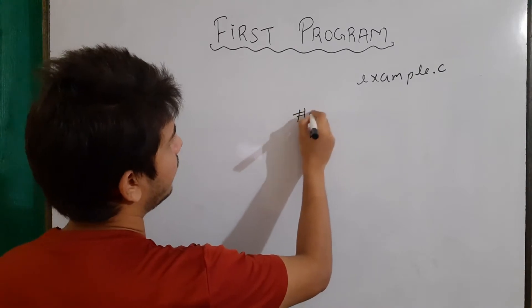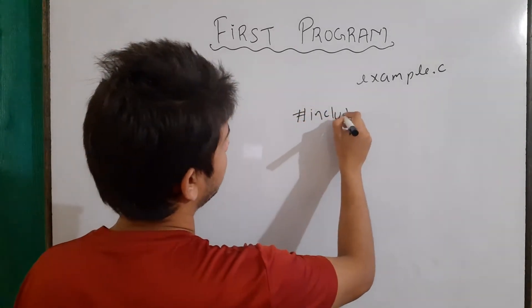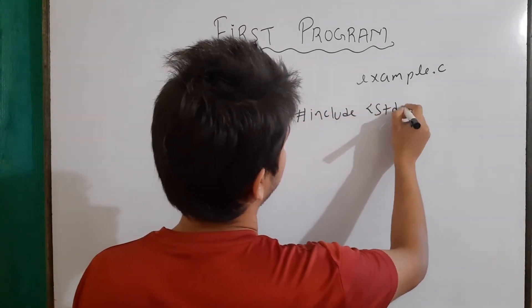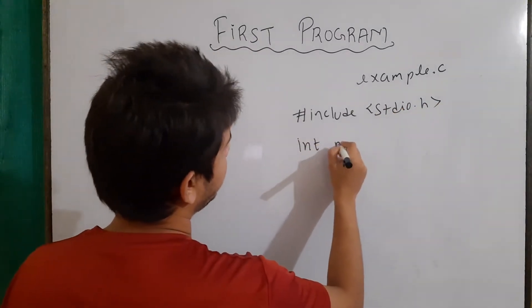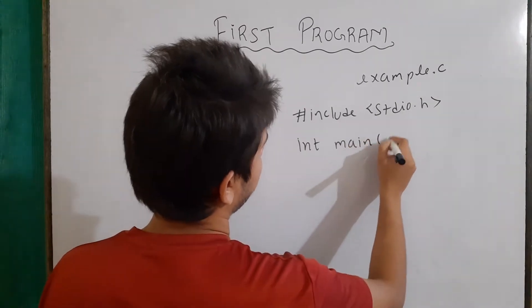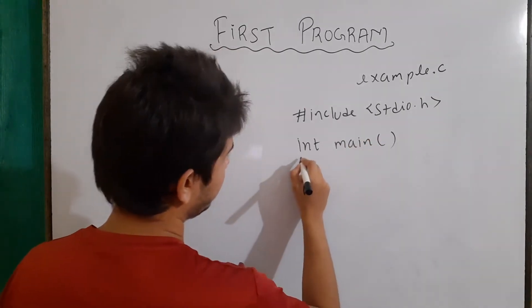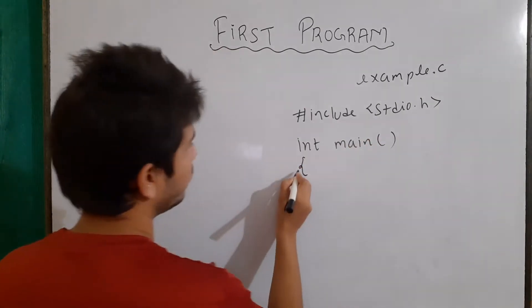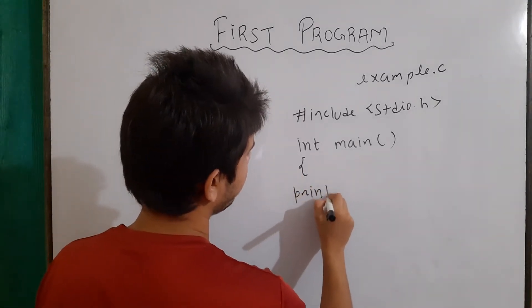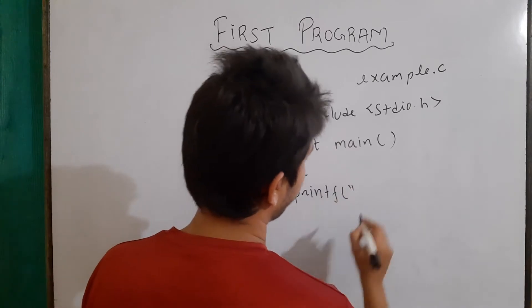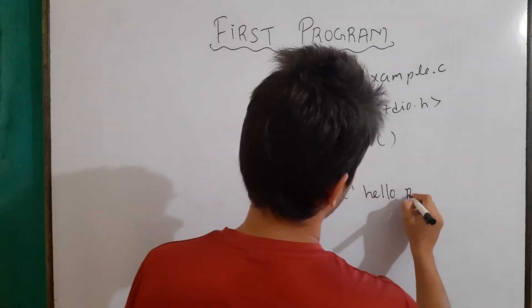Inside it, first of all, write hash include stdio.h. After that, write int main and then parenthesis, then curly braces, this is opening curly braces and inside it, write printf and we will write here, hello, programs.